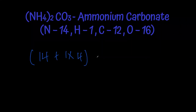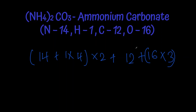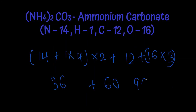Now let's find the relative molecular mass of ammonium carbonate, (NH4)2CO3. The calculation is: (14 + 1×4)×2 + 12 + 16×3 = (18×2) + 12 + 48 = 36 + 12 + 48 = 96. The relative molecular mass of ammonium carbonate is 96, and its molar mass is 96 g mol⁻¹.